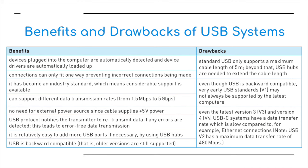Even the latest USB version 3 and USB-C (version 4) systems have a data transfer rate which is slow compared to, for example, Ethernet connections. For reference, USB v2 has a maximum data transfer rate of 480 Mbps.